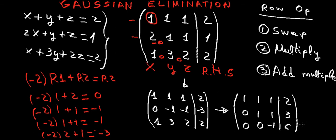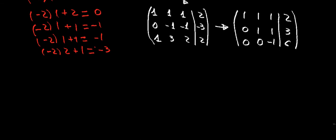From this final matrix, we go back to equation notation with x's, y's, and z's — the same way we went from simultaneous equations into a matrix, we now go from the matrix back into equations. The column for x gives coefficients of x, the column for y gives coefficients of y, and the column for z gives coefficients of z, with the straight line representing the equals sign.